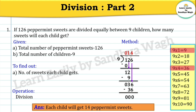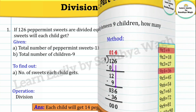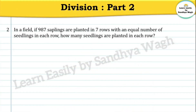The final answer is each child will get 14 peppermint sweets. Next word problem: In a field, if 987 saplings are planted in 7 rows with an equal number of seedlings in each row, how many seedlings are planted in each row?